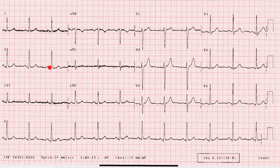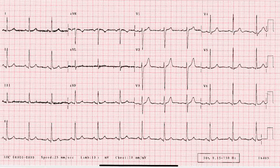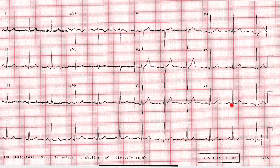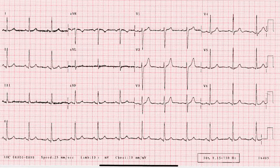Looking at multiple leads, the PR segment appears isoelectric. Don't be fooled by the downslope of the P-wave and think it's depressed — the PR segment is isoelectric. The PR interval is within normal limits. The PR segment and PR interval are constant — not shortened or prolonged within the same lead. Moving to the QRS complex, in V5 and V6 there is a small Q-wave — a septal Q-wave. Based on the axis being upright in lead 1, AVF, and lead 2, the axis is likely near 90 degrees, so we also expect septal Q-waves in inferior leads.